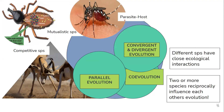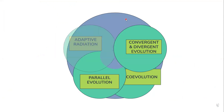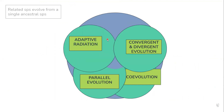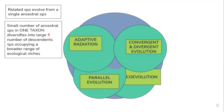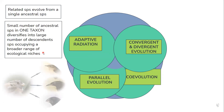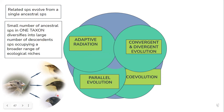Next we have adaptive radiation. It is when related species evolved from a single ancestral species — one particular taxon — diversify to form many descendants which occupy various ecological niches. The best example is Darwin's finches. One finch diversified to give a variety of species that occupied various ecological niches — some fed on fish, some on worms, some on fruit.